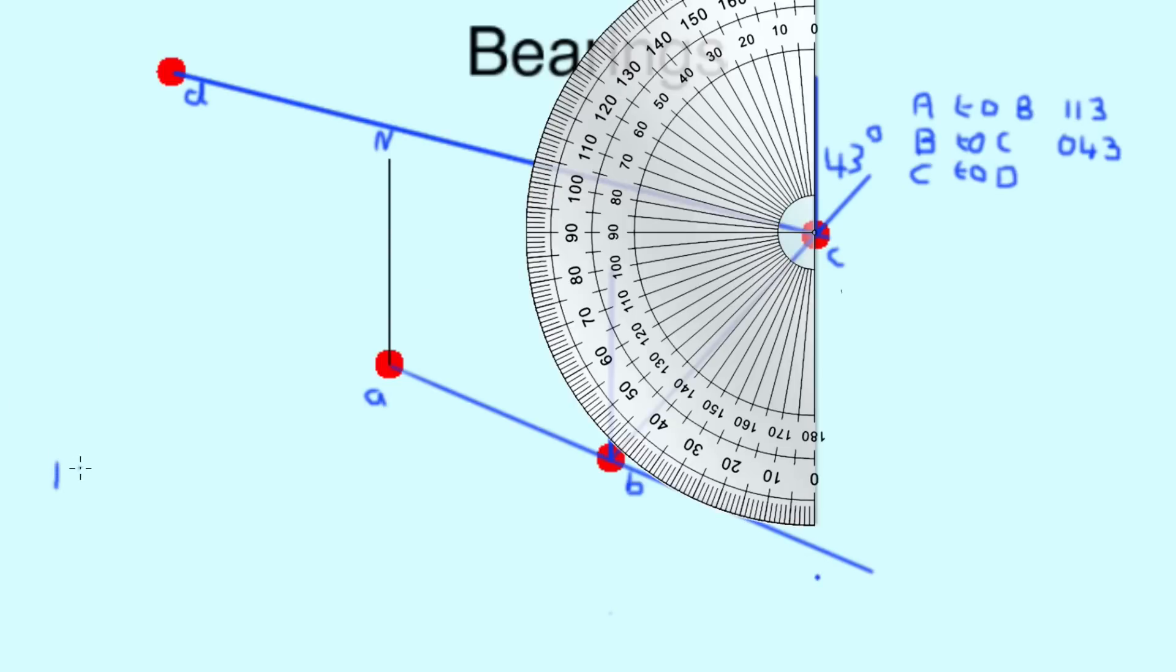Now, we simply need to add together our original 180 to our 104 to get our clockwise angle measurement. So, 180 plus 104 is 284.